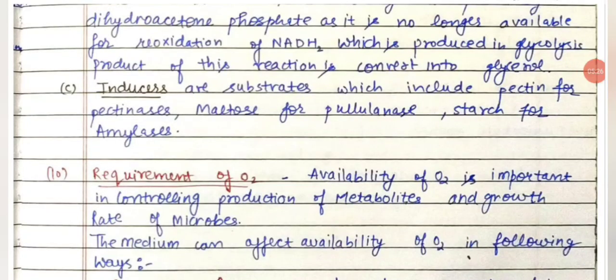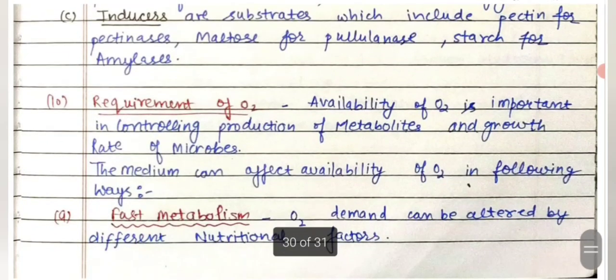Then we have inducers in the medium. Inducers are substrates which include pectin for pectinases, maltose for pullulanase, and starch for amylases.